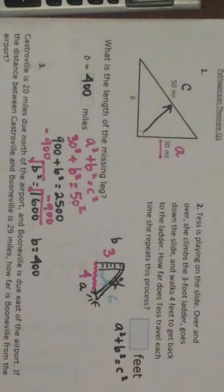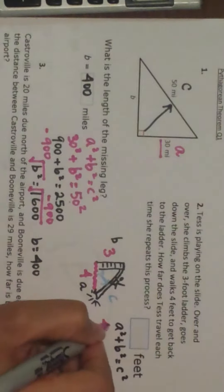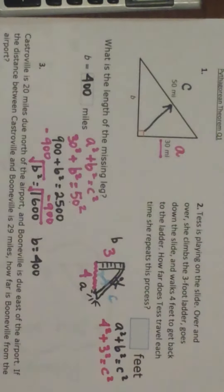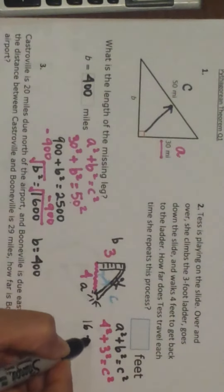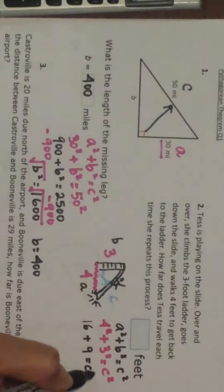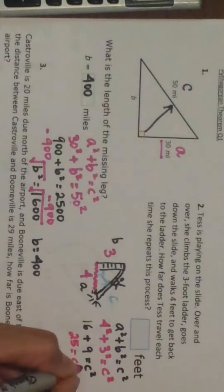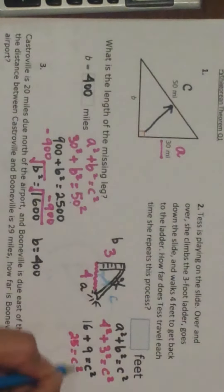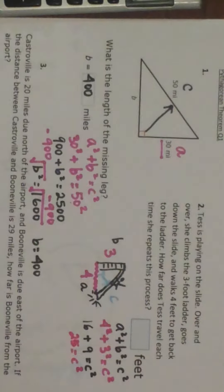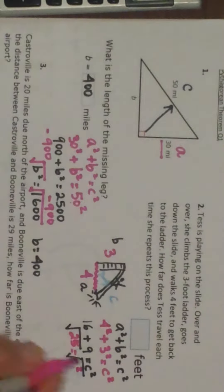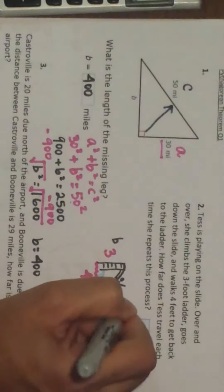Step four, replace numbers for letters. Where I see A I put 3, where I see B I put 4, so: 4 squared plus 3 squared equals C squared. 4 squared is 16, plus 3 squared is 9, equals C squared. 16 plus 9 is 25, so 25 equals C squared. To get rid of the squared I take the square root of both sides — the square root of 25 is 5 — so C equals 5.